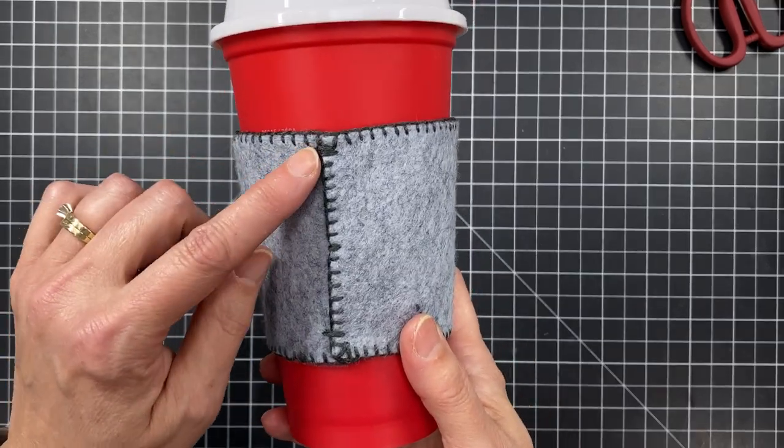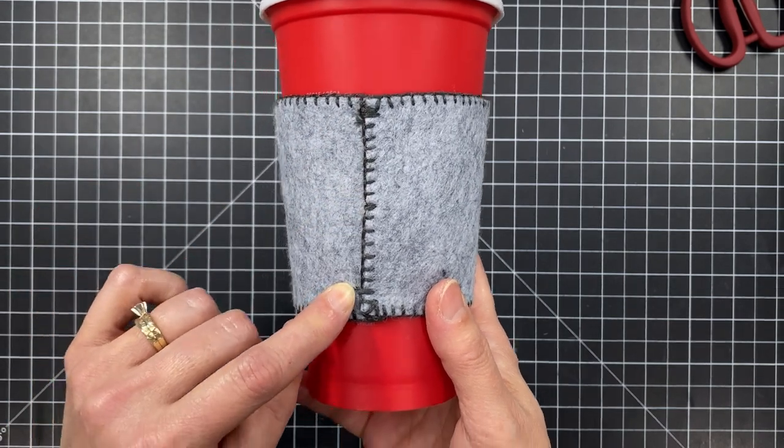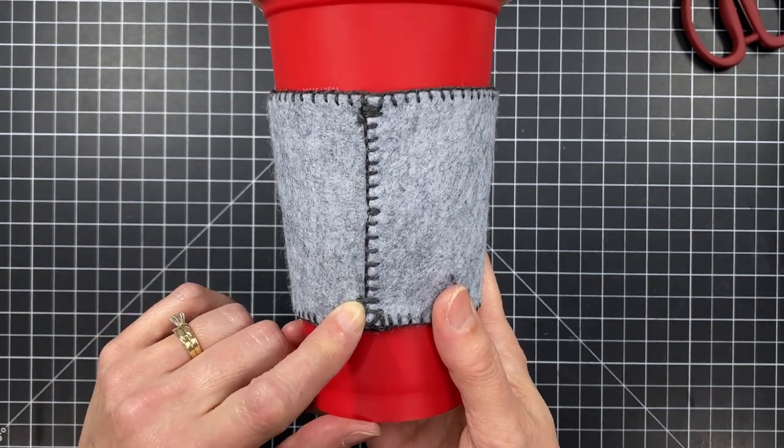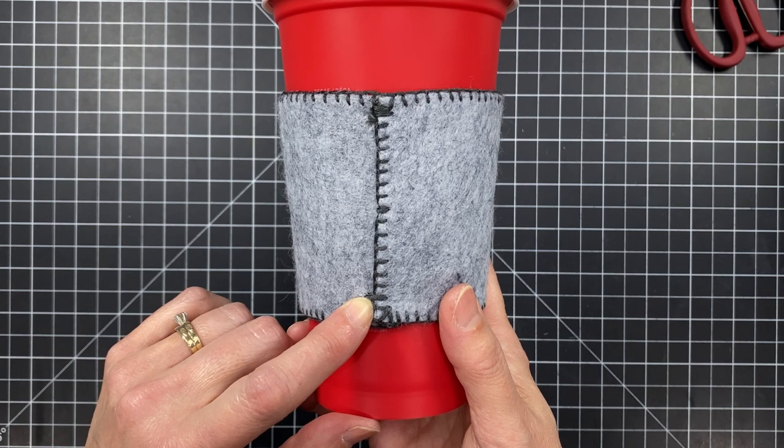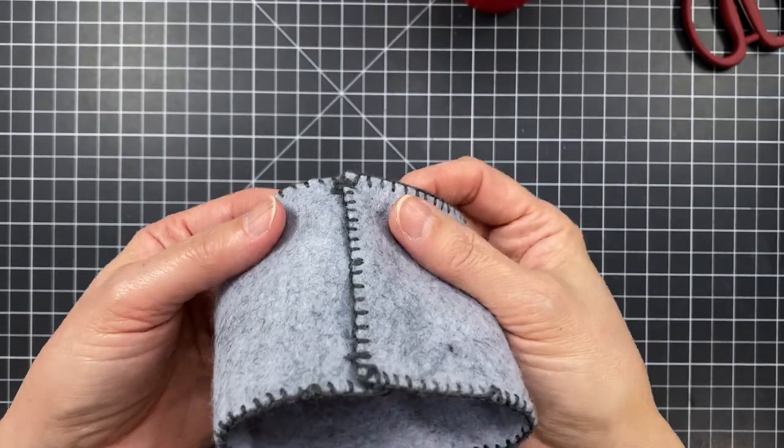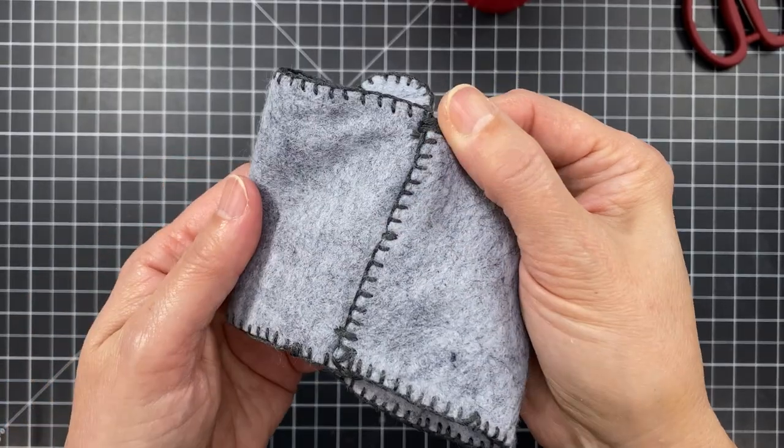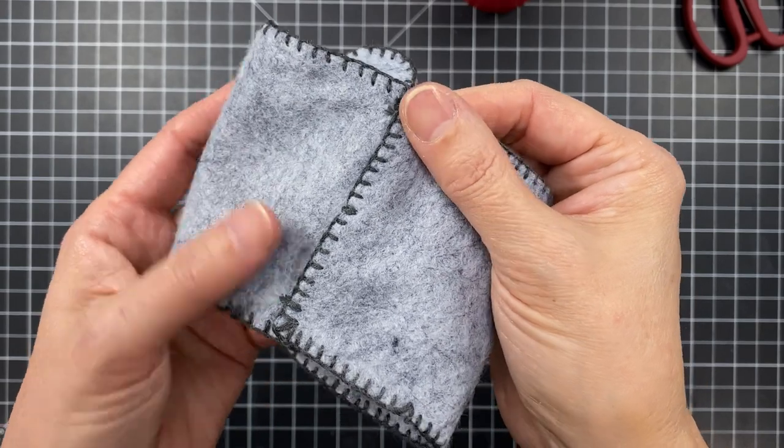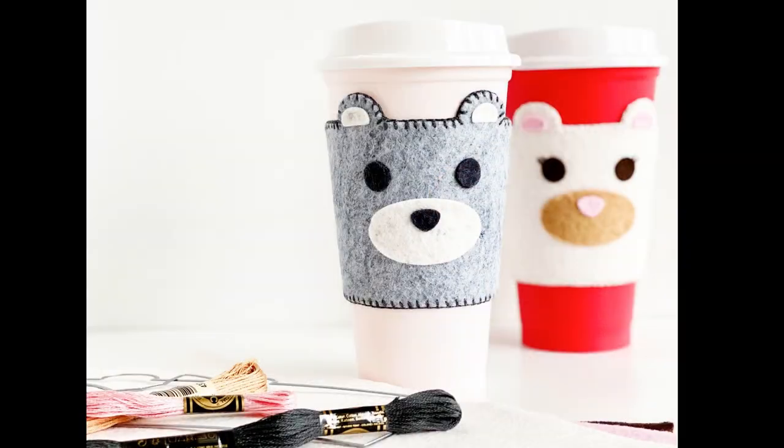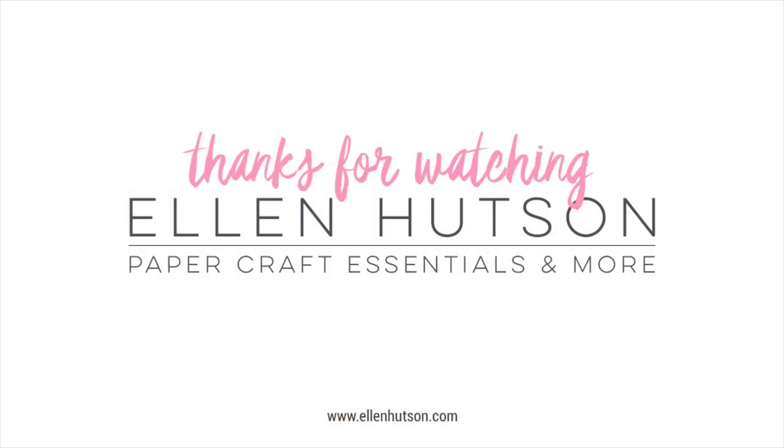And here you can see the finished project. And I did some tacking stitches there. I wrapped it around my cup and used some pins to hold it in place. And then I just put a couple of stitches there to tack it. But you could use all different kinds of closures, whatever floats your boat. And these are so fun to make. I think you're going to get addicted. I hope you enjoyed. And check out the Felt Coffee Cozy Kit. It's so much fun. Thanks for watching.